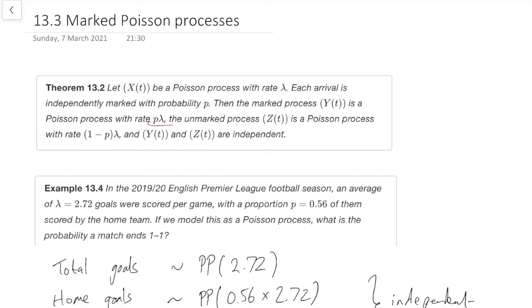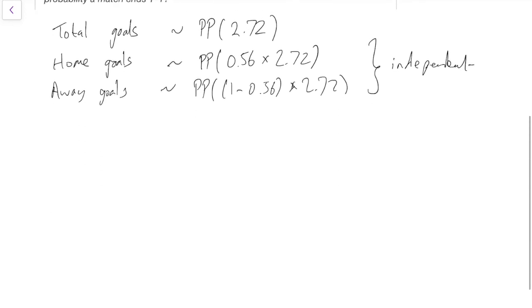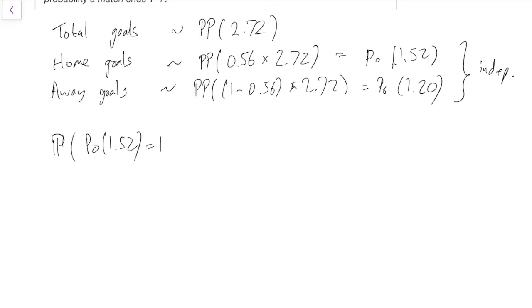So that's the new Poisson process bit over. But now we do still want to do the actual calculation. So 0.56 times 2.72, I calculated this earlier, that's a Poisson 1.52, rate of 1.52 home goals per game and a rate of 1.20 away goals per game. So the probability it's a 1-1 draw is the probability that the Poisson 1.52, the marked home goals, equals 1, and the Poisson 1.20 unmarked away goals is also equal 1.